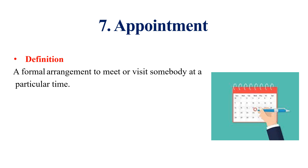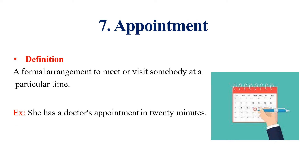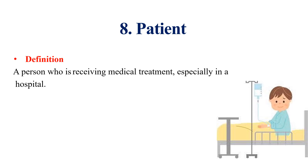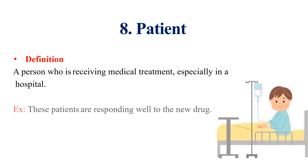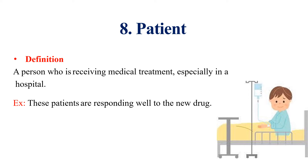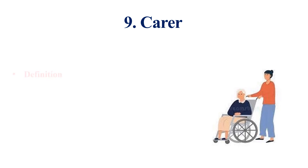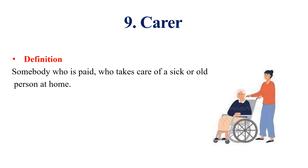Appointment: an appointment is a formal arrangement to meet or visit somebody at a particular time. Example: She has a doctor's appointment in 20 minutes. This word is a noun. Patient: a patient is a person who is receiving medical treatment, especially in a hospital. Example: These patients are responding well to the new drug. This word is a noun. Carer: a carer is somebody who is paid to take care of a sick or old person at home. This word is a noun.